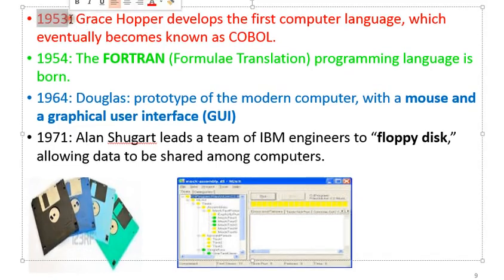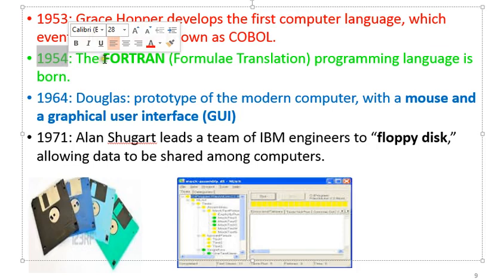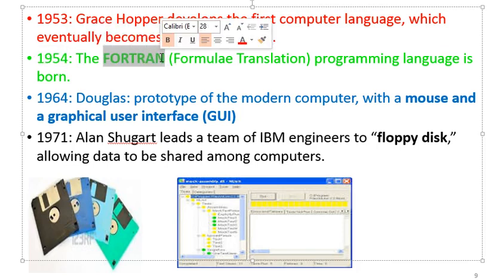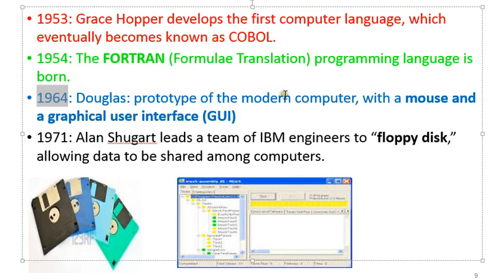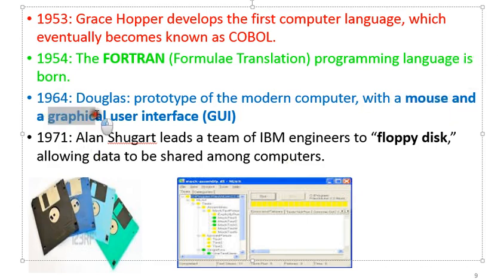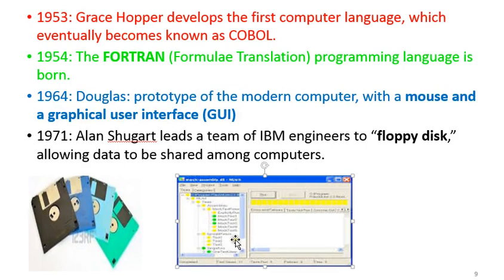In 1953, Grace Hopper developed the first programming language known as COBOL — Common Business-Oriented Language. In 1954, the FORTRAN programming language, an abbreviation of Formula Translation, was developed. In 1964, a person called Douglas came up with a prototype of a modern computer — one that started using a mouse for navigating and also used a graphical user interface, where you can click to perform actions. This is a typical example of what we call a graphical user interface.